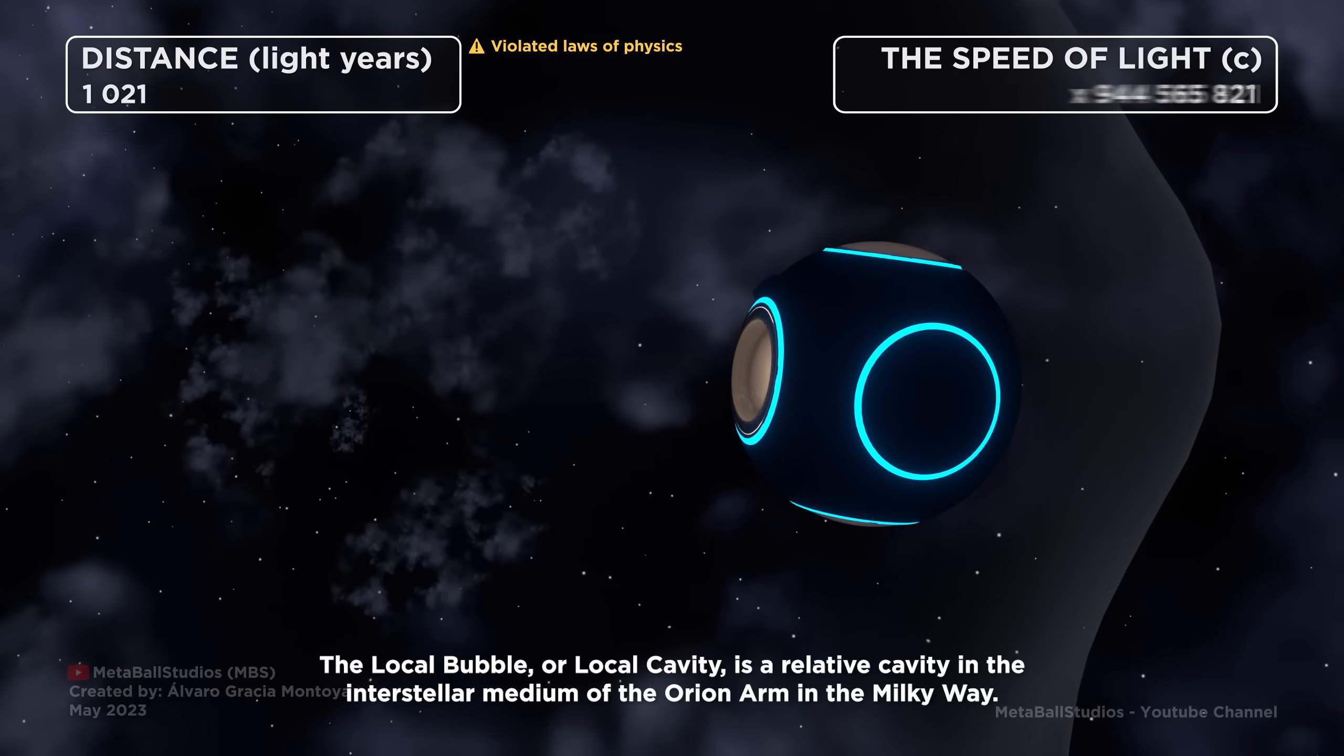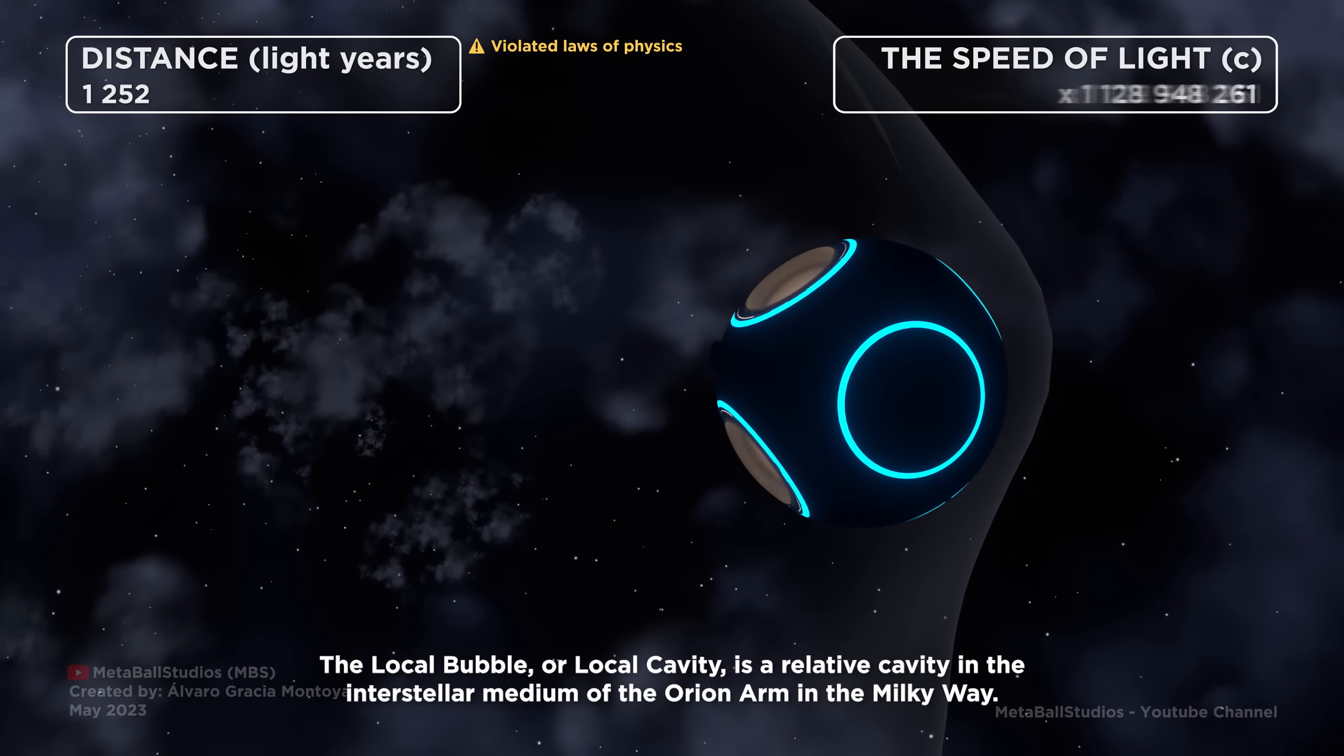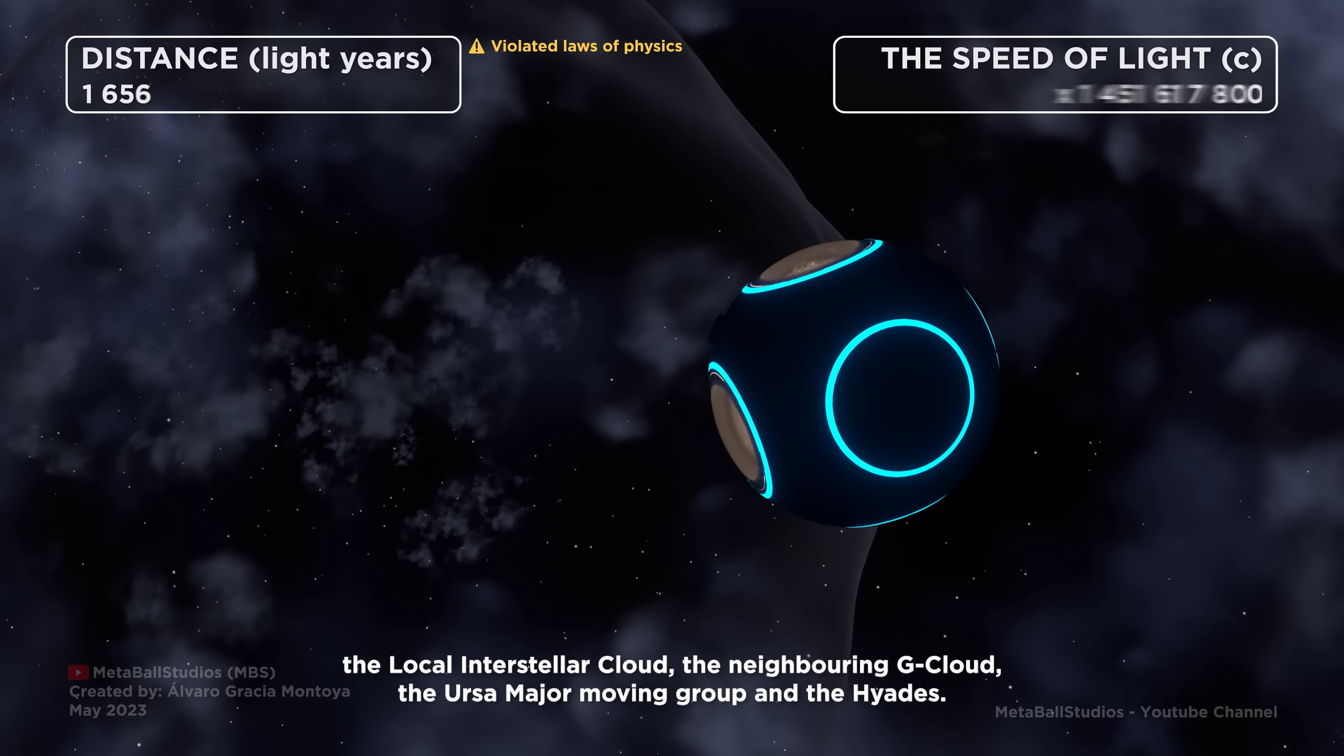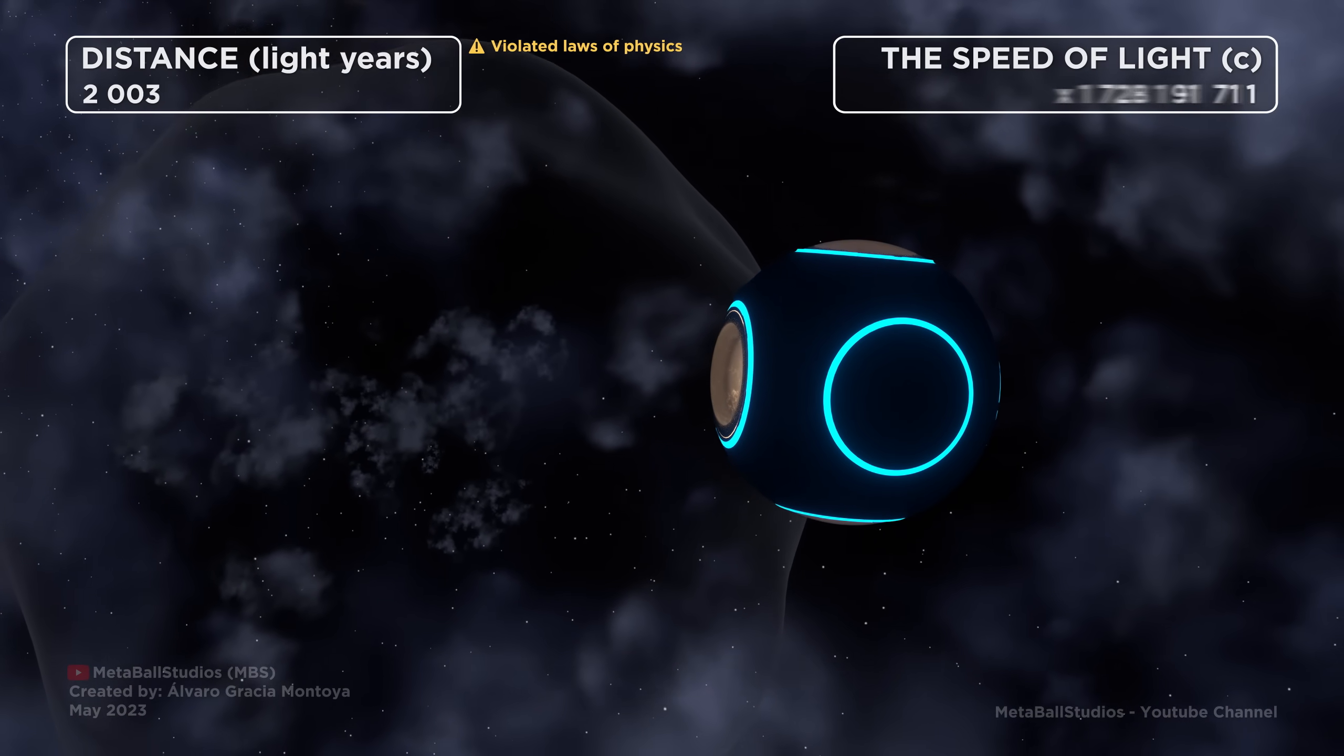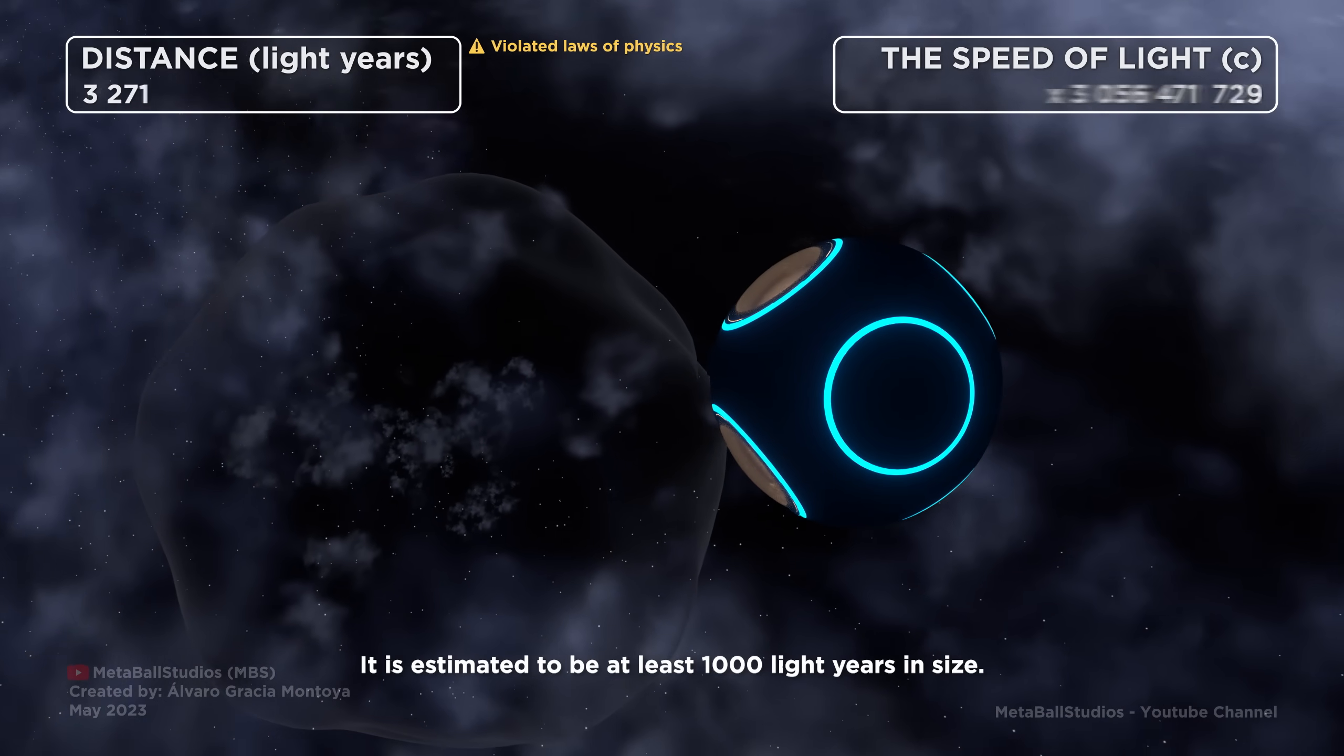The Local Bubble, or Local Cavity, is a relative cavity in the interstellar medium of the Orion Arm in the Milky Way. It contains the closest of celestial neighbors and among others, the Local Interstellar Cloud, the neighboring G-Cloud, the Ursa Major Moving Group and the Hyades. It is estimated to be at least 1,000 light years in size.